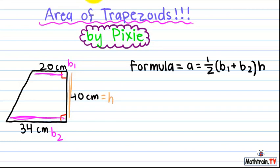Then you're going to want to plug in everything. You're going to want to do A equals one-half times 20 plus 34, and then all of that times 40.